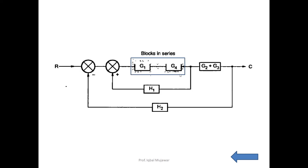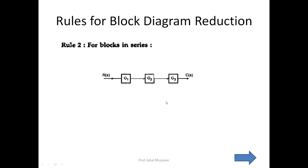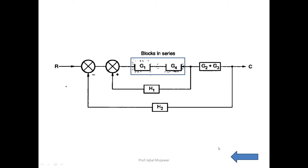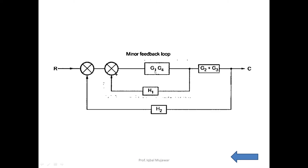After that, if you see over here, these two blocks are in series. As per the rule, when blocks are in series, we need to multiply directly. If G1, G2, G3 are in series, then we multiply G1 × G2 × G3. We are applying the same here for G1 and G4 — they are in series. Multiplying, we get G1G4. Then we reduce those two blocks also.